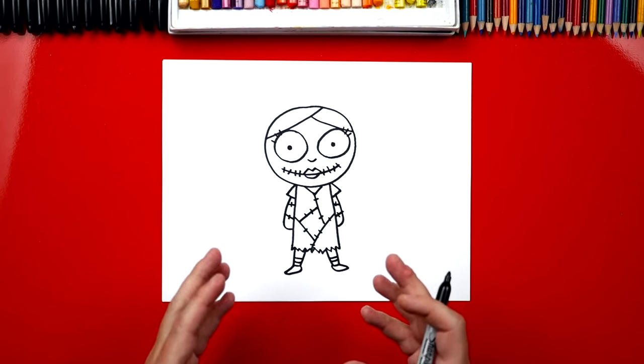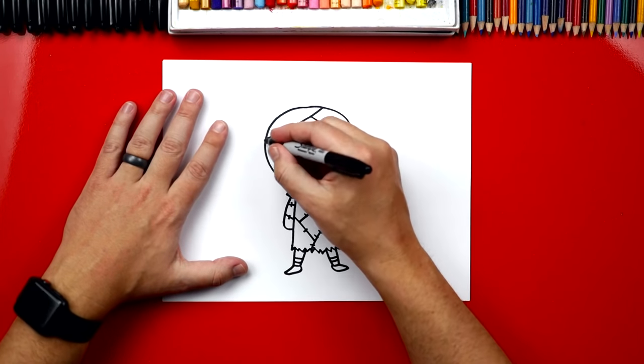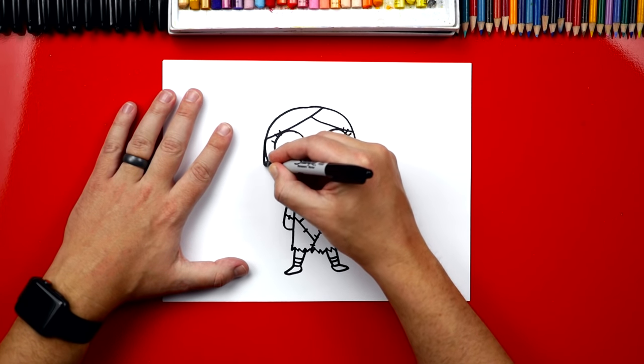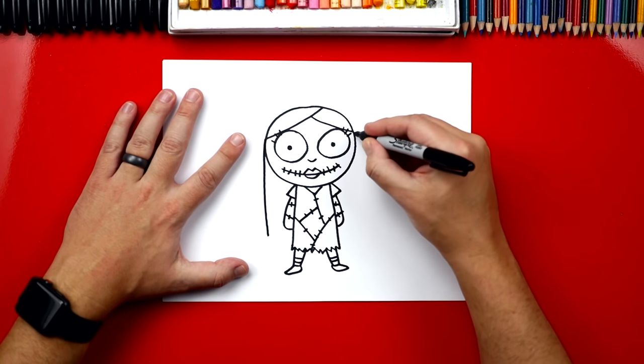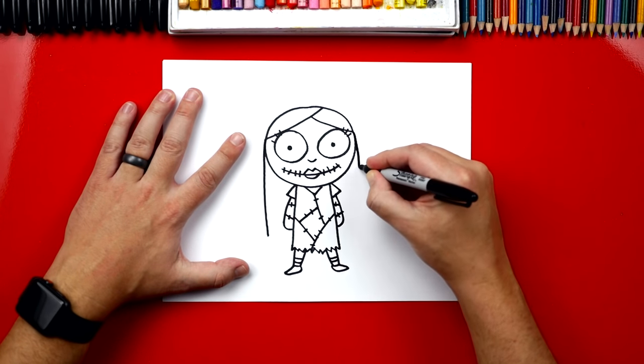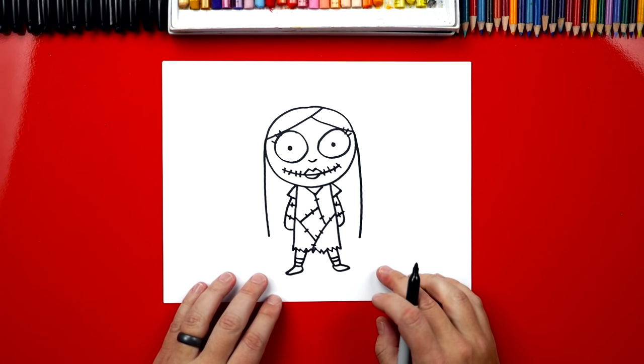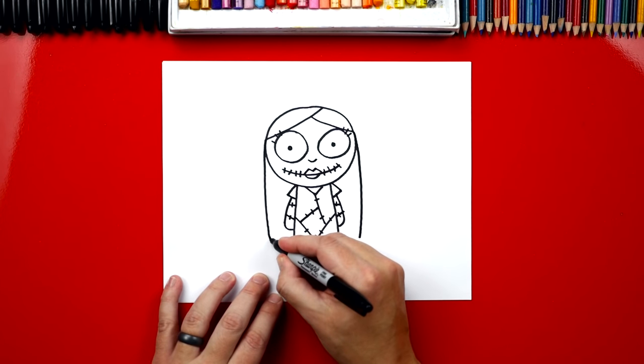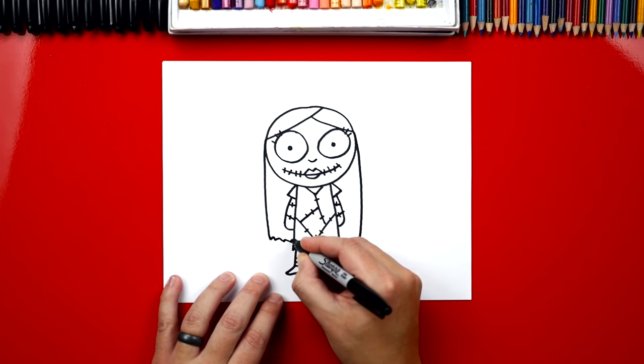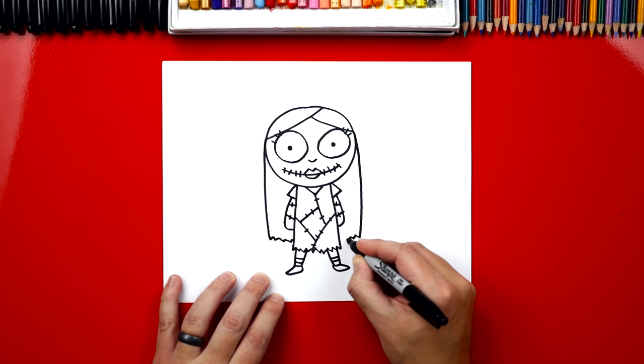Okay, we're almost done except we need to add her really long hair, or else it doesn't really look like Sally. So we're gonna draw a line that comes down on each side of her head. We're gonna go past her arms, and then we're gonna add another zigzag line coming in to her dress on each side.